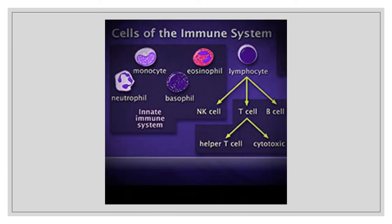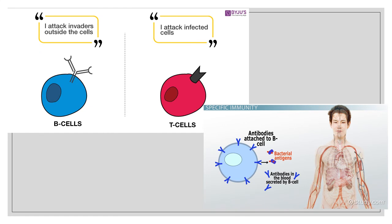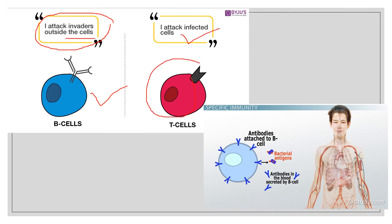These are some of the cells present inside our body for the immune system — called cells of the immune system. They include monocytes, eosinophils, basophils, and neutrophils, which are part of the innate immune system. There is also the lymphocyte group, which contains NK cells, T cells, B cells, helper T cells, and cytotoxic cells. You should remember there are specialized cells present in our body that form the immune system. B cells attack invaders outside the cells; T cells attack infected cells. Antibodies bind to antigens and destroy them, and these antibodies are found in the bloodstream.